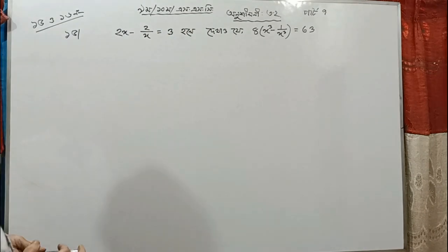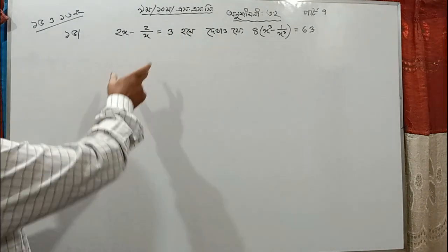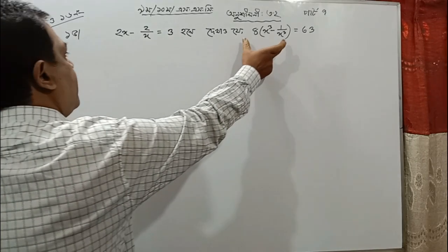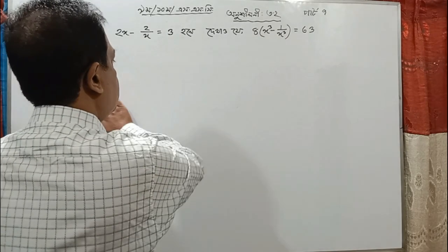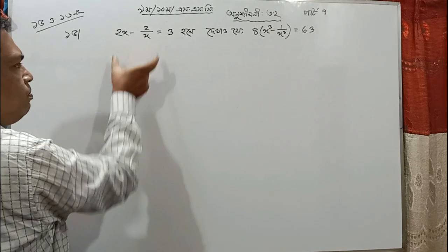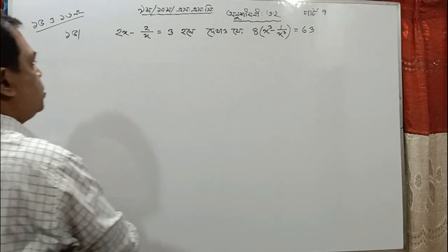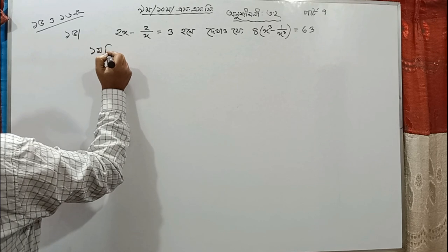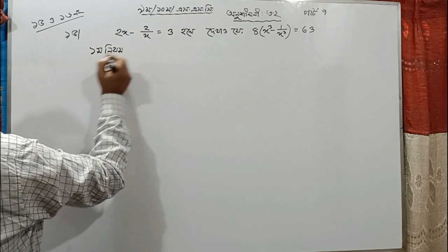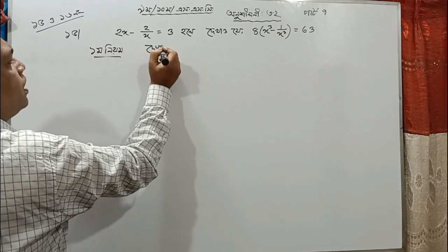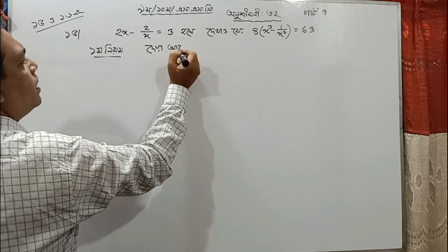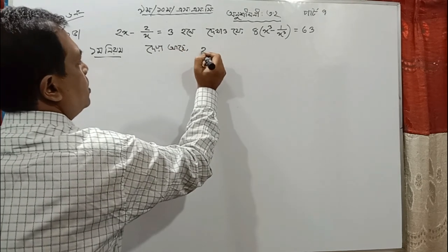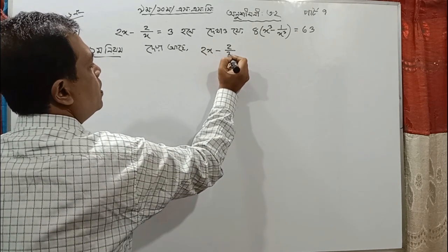The first thing we need to do: we need to make 2 by 1, so we need to prepare 2 by x. So we need to add 2x minus 2 by x.